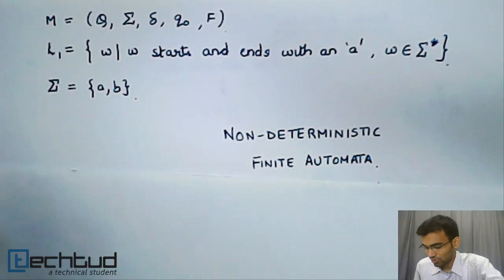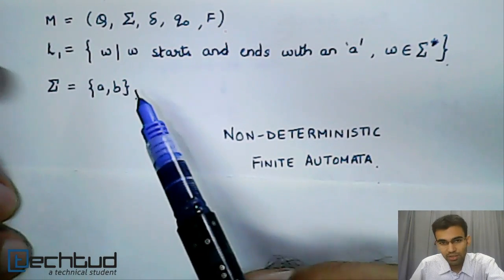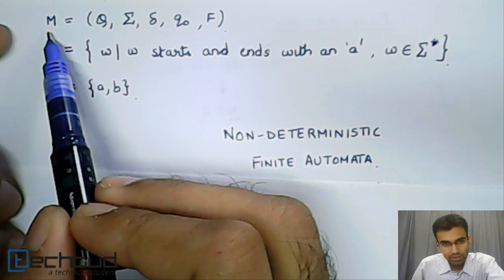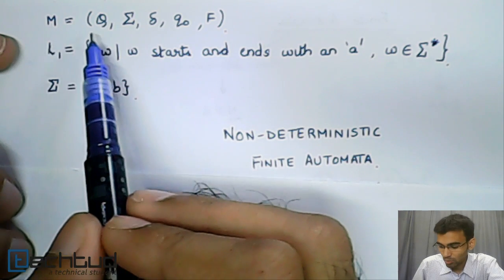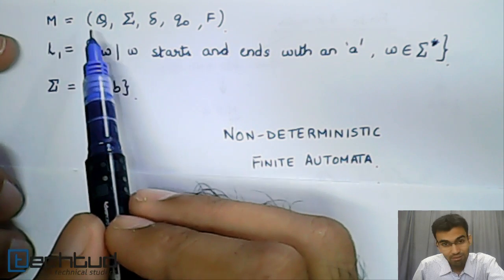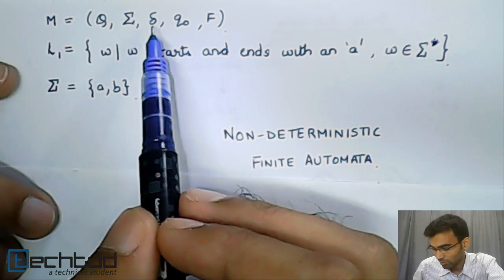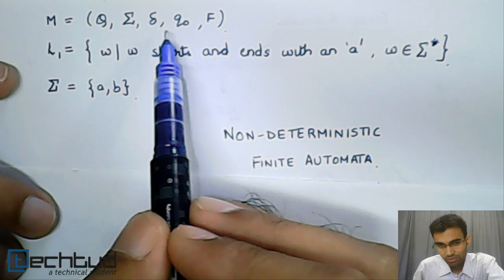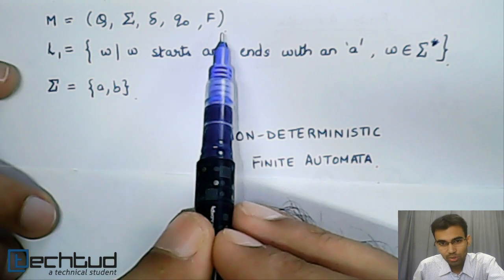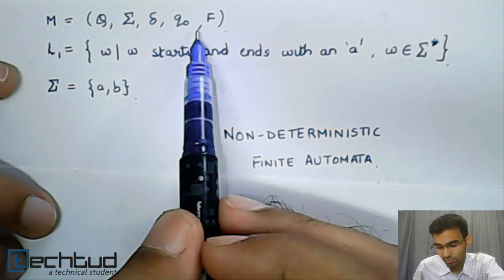In the last lecture, we saw that DFA was defined as the DFA M, the machine M, equals Q, the set of states finite in number, sigma the alphabet, again finite in number, delta the transition function, the initial state Q0, and the set of final states F, finite in number again.